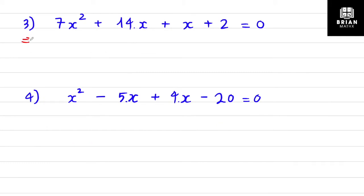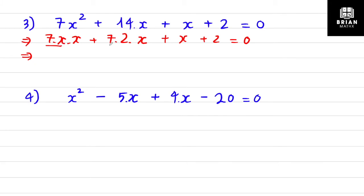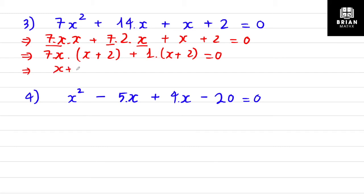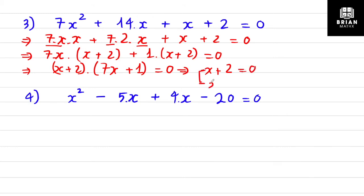Question 3: you have 7x, and 7 times 2, with (x + 2) = 0. The common factor is 7x; take 7x outside, with (x + 2) inside the bracket. On the other side you also have (x + 2), so you can write 1 times (x + 2). So (x + 2) is the common factor; take it outside, leaving (7x + 1) in the second bracket. Setting each bracket to zero: x = -2 and x = -1/7.